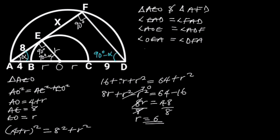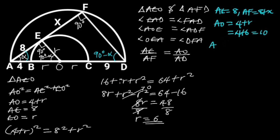And the proportionality of their corresponding sides is AE over AF is equal to AO over AD. AE is equal to 8, AF is equal to 8 plus X, AO is equal to 4 plus R which is equal to 4 plus 6, and 4 plus 6 is equal to 10. And AD is equal to 4 + R + R + 9, which is equal to 4 + 6 + 6 + 9, and this will give us 25.